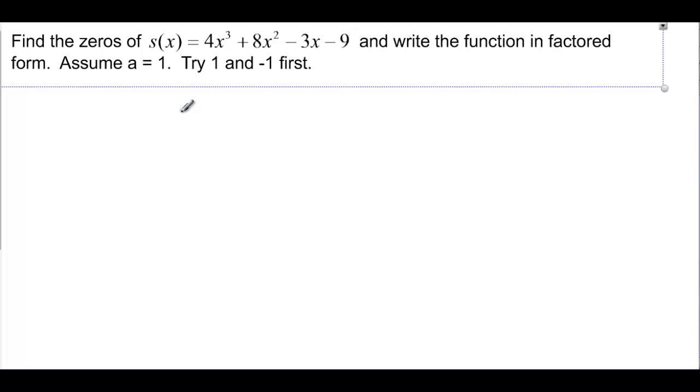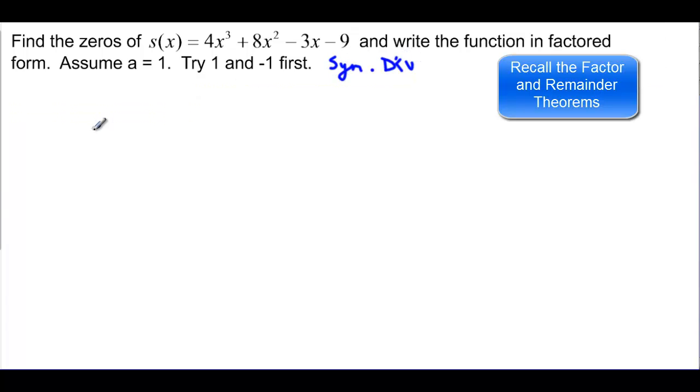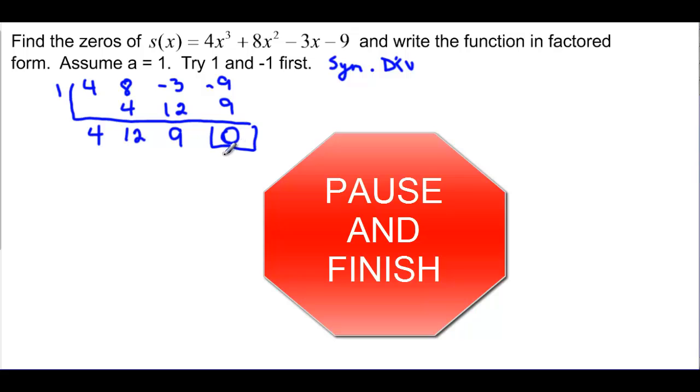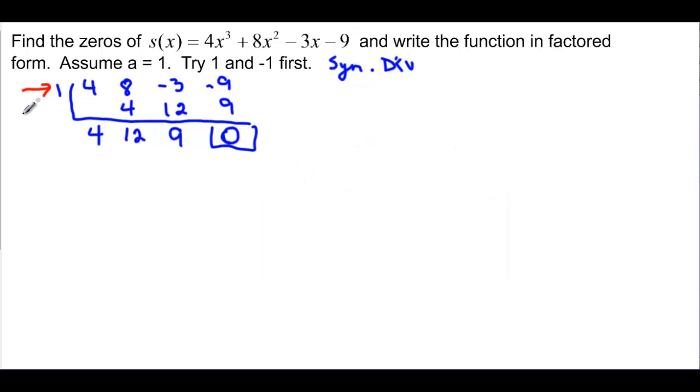So find the zeros of this and then write the function in factored form. And assume a. And it says try 1 and negative 1 first. That means synthetic division. That's what they're talking about. So we can find zeros from synthetic division. We learned that. So I'm going to try 1. See if that works. It's on the outside. On the inside we have 4, 8, negative 3, and negative 9. Nothing's missing. If I bring down the 4, and then 4 times 1 would be 4. And remember if we do that, that means that this one is a 0 because the remainder was 0. And this also means that now I have 4x squared plus 12x plus 9.